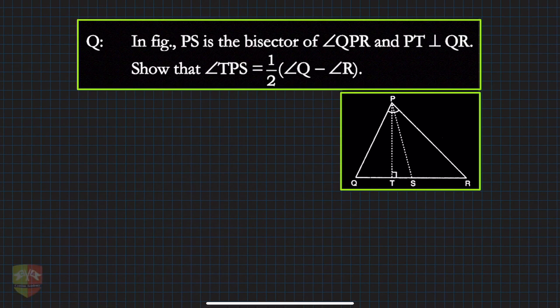Hello friends, welcome to another problem solving session on triangles and its angles. In the given question, PS is the bisector of ∠QPR. So you can see this line PS is the bisector of ∠QPR.